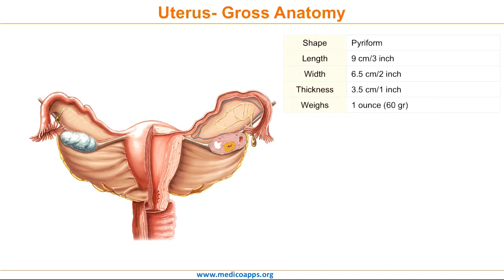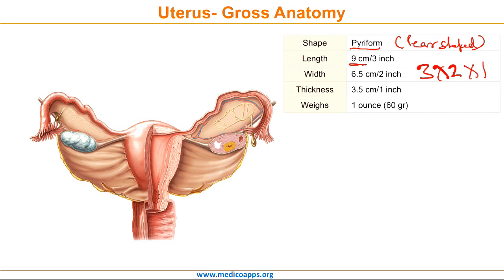The shape of the uterus is piriform, or pear-shaped. If we see the dimensions in inches, it is 3 x 2 x 1 inch. So its length is 3 inches or about 9 cm, and width is 2 inches or 6.5 cm, and its thickness is about 1 inch or 3.5 cm.